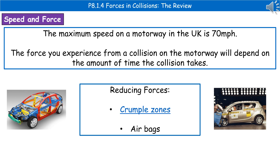The force you experience from a collision is dependent on the amount of time it takes for that collision to come to a stop. So in the design of cars, to counteract these forces, we can increase the time it takes for the car to come to a complete stop. We've built in things like a crumple zone, where materials of different densities are built into the car so that some are designed to squish up in an accident, meaning the car takes longer to stop, reducing the forces acting on the people inside.